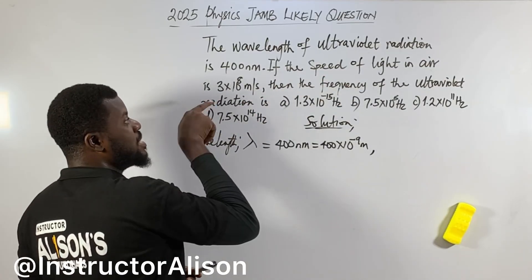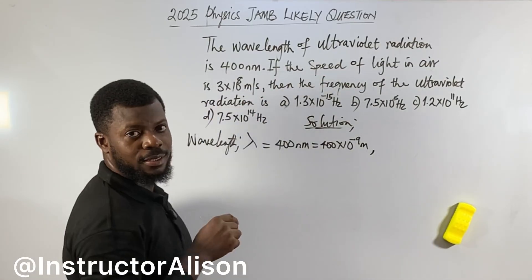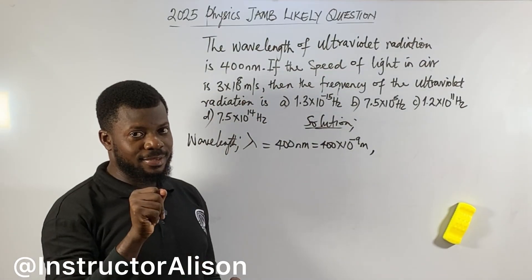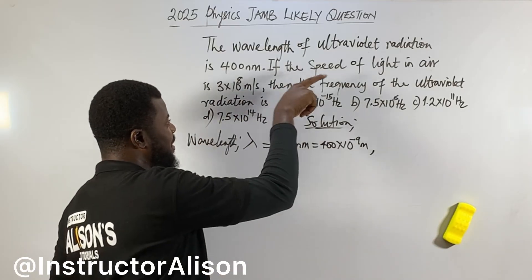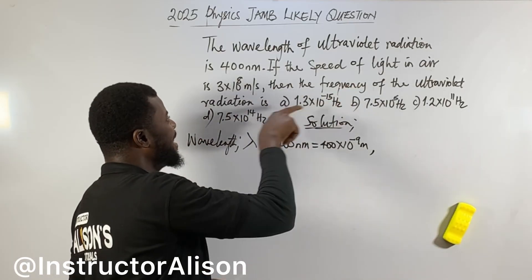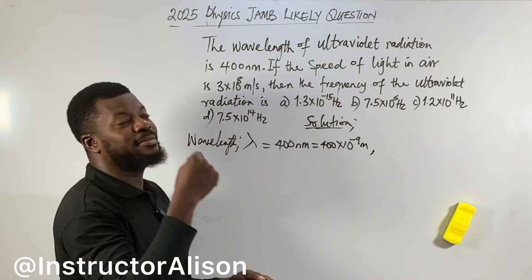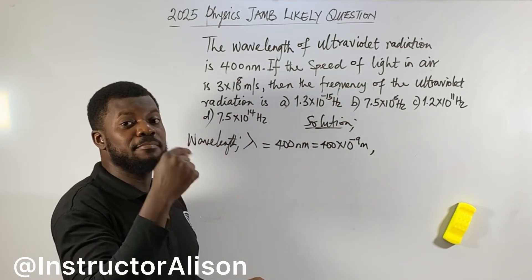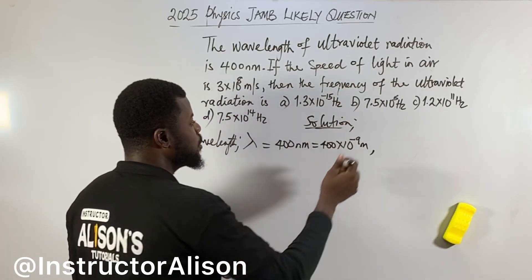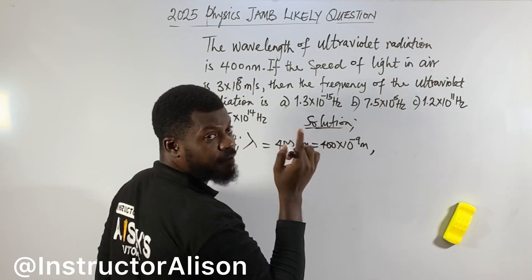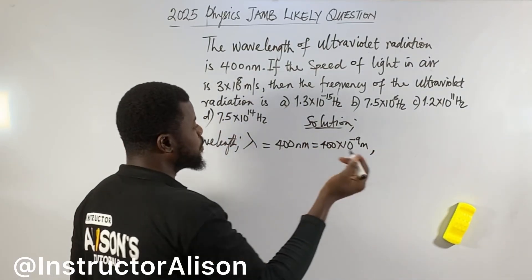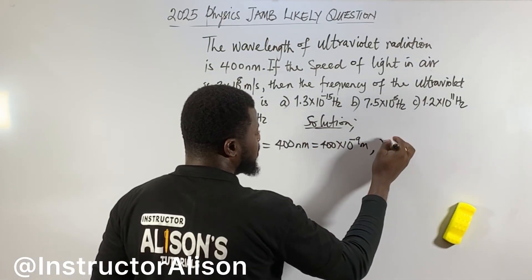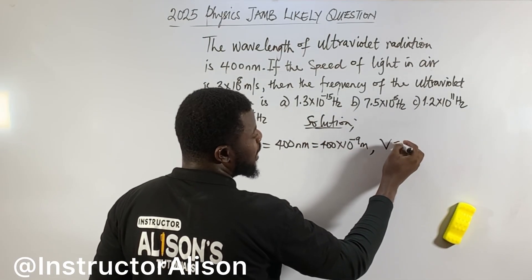If the speed of light in air is 3 times 10 to the power of 8 meters per second — that is the speed of light. Now people like to use 'c' for the speed of light, and some people like to use 'v'. Maybe use 'v' if you like.